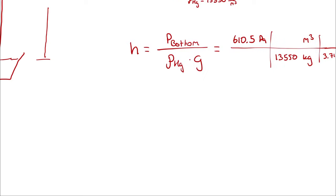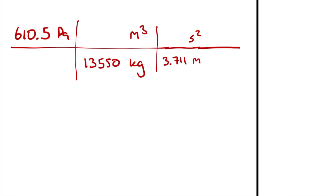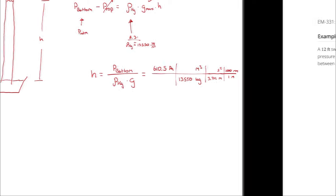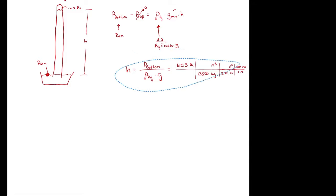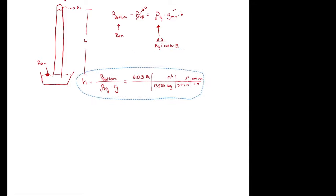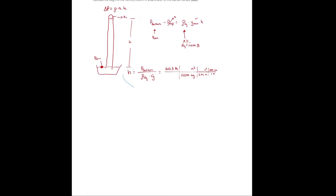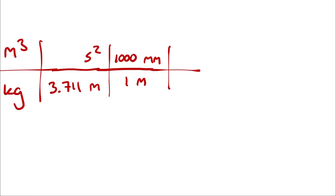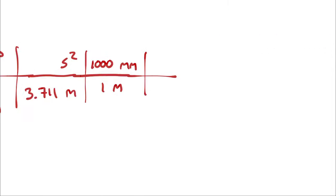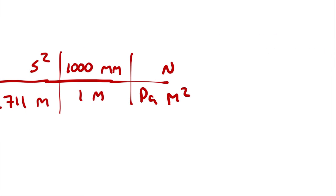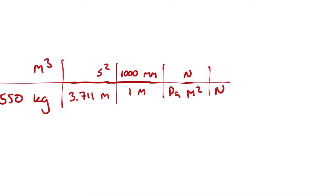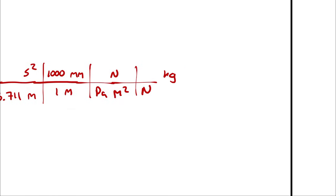We want an answer, presumably, in millimeters because the problem asked for that. So I'm going to write 1,000 millimeters in 1 meter. And I'm going to need a little bit more room. I'll scoot this over. And then to get the units inside of the pascal to cancel, I will break that apart into its component pieces. A pascal is a newton per square meter.